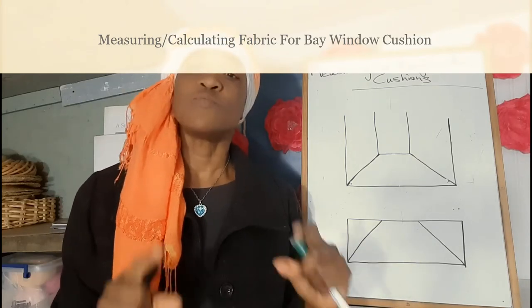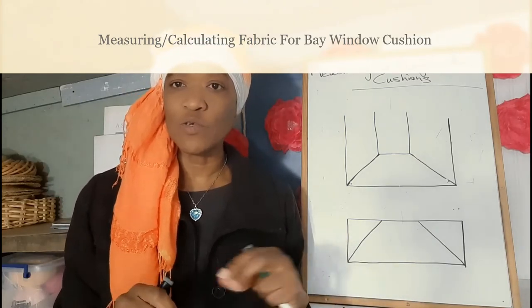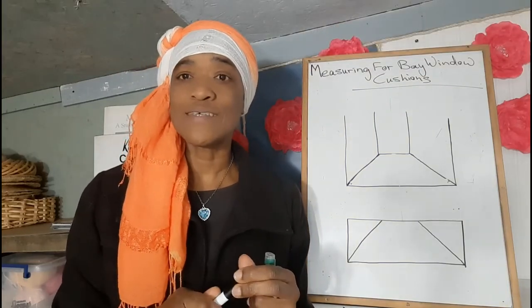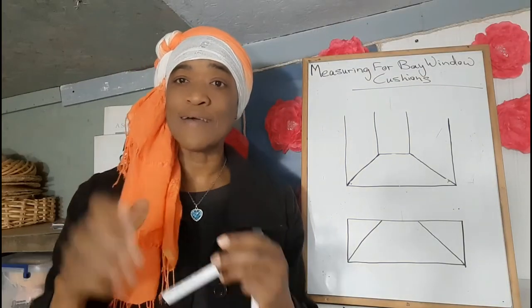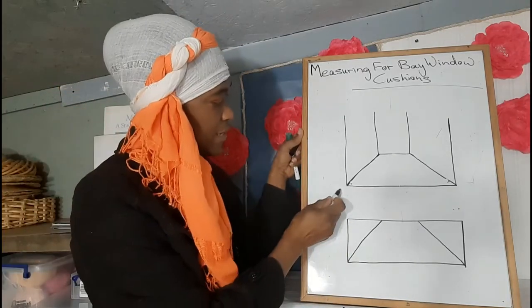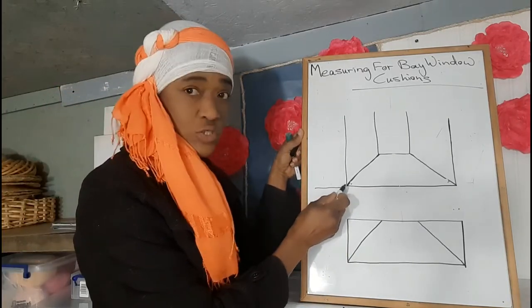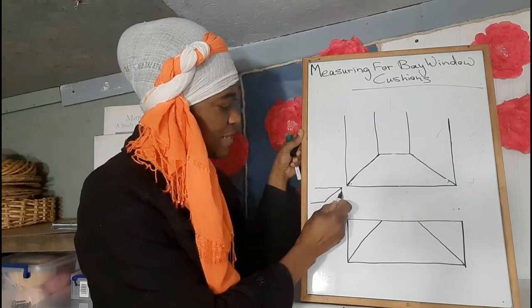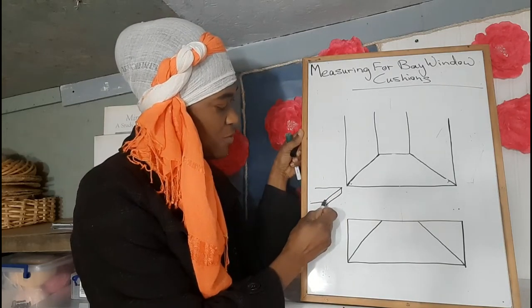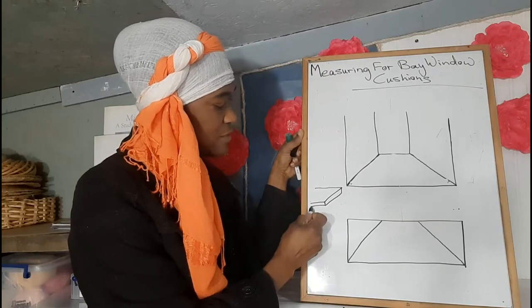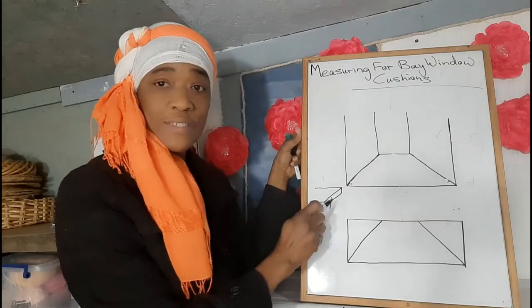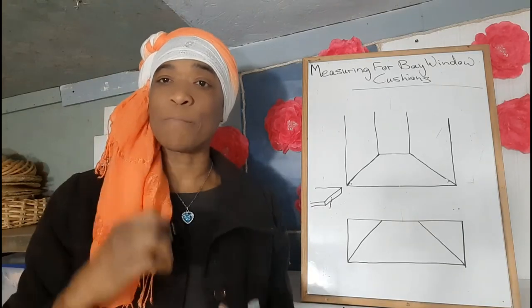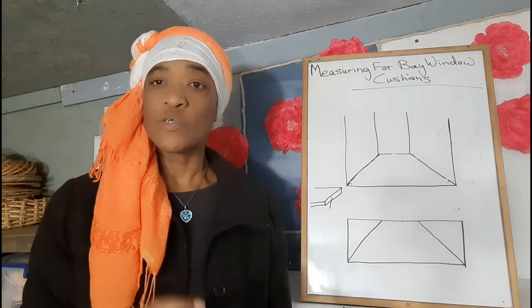Box cushions, for those of you who might not be sure, are cushions that have that dimension — they have the gusset. It's kind of like this. It has that dimension here which is called the gusset, and that gives it the dimension. It joins the front and the back panel together.